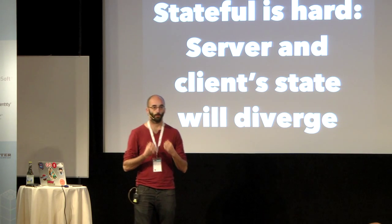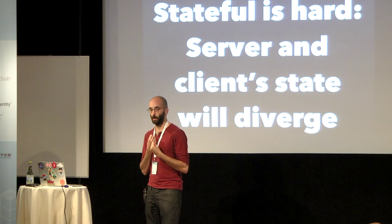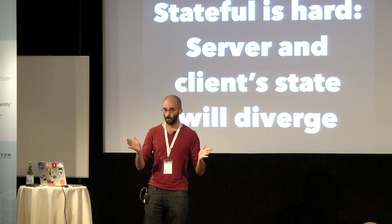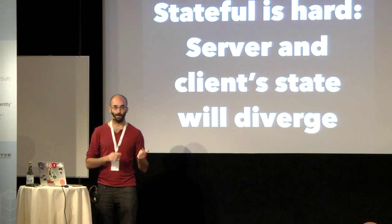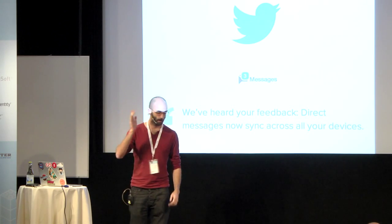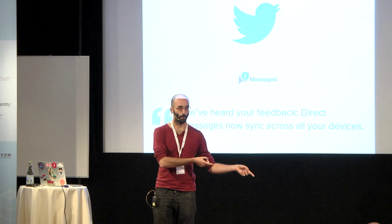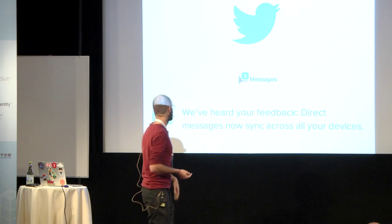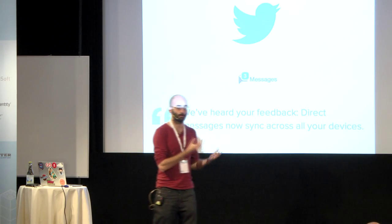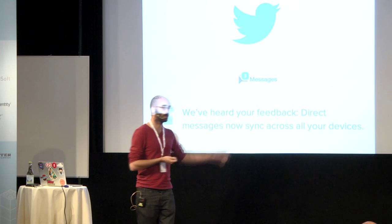First — and for me this is the most important one — stateful is really hard. If you're a client consuming an API, try not to keep state on your client if you can. When you keep state on your client, you have to keep it in sync, and eventually the state will diverge. The most frustrating example was Twitter. You'd read a message on your phone, then go to the website and it wasn't marked as read. You had to read it on every single device. They just fixed it — now they fetch the information fresh. If you can, go stateless.